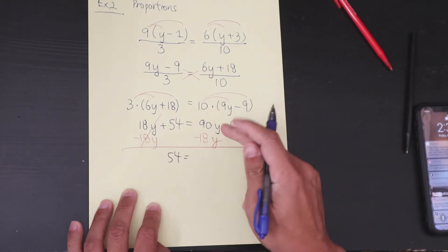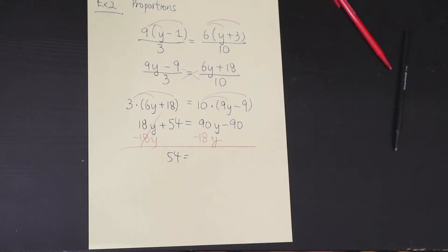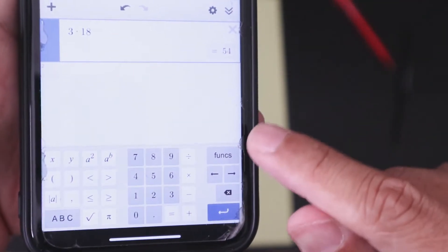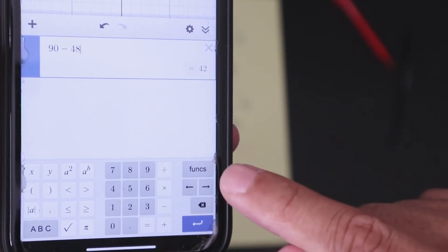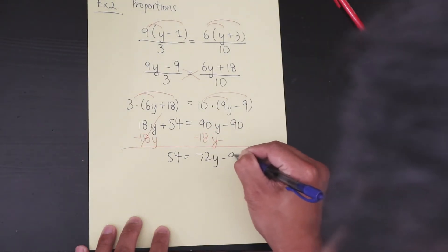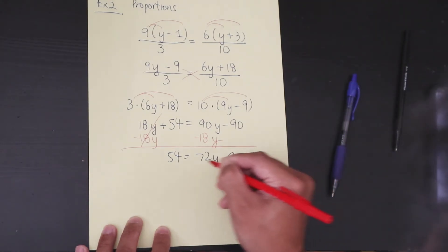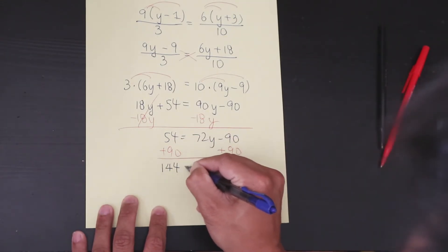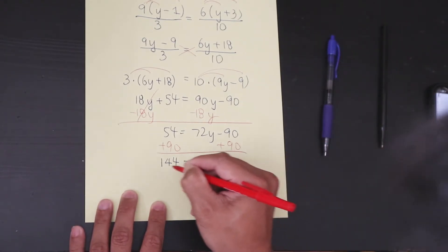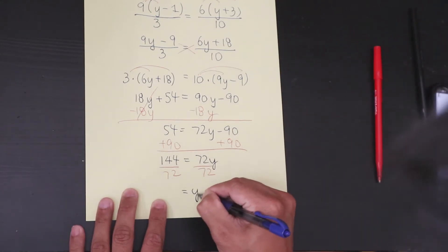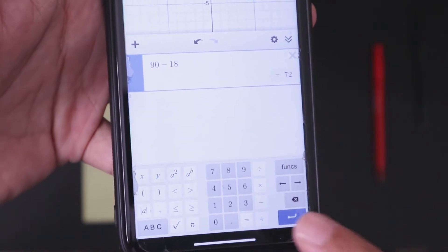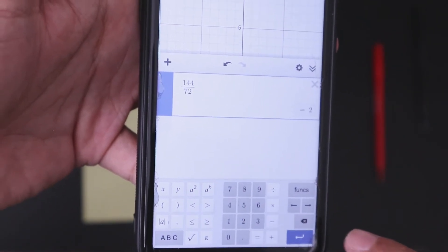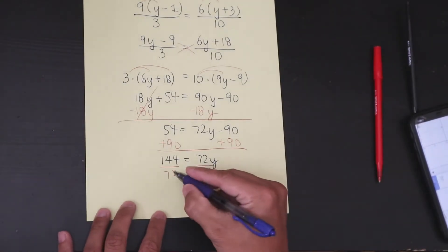So you have 54 equals 72y minus 90. Add 90 to both sides: 54 plus 90 is 144, so 144 equals 72y. Divide both sides by 72 using a calculator: 144 divided by 72 is 2. So y equals 2.